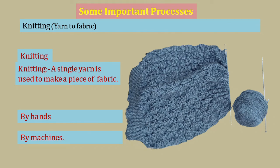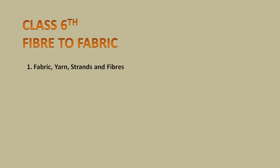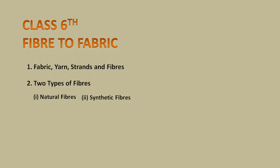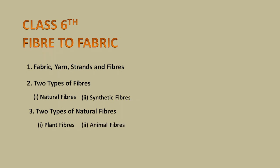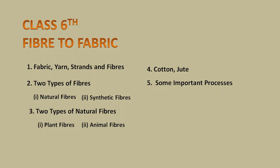Let us now recap what we have discussed in this chapter. We discussed what are fabric, yarn, strands and fibers. Two types of fibers — natural fibers and synthetic fibers. Then two types of natural fibers: plant fibers and animal fibers. Then a little detail about cotton and jute. Then some important processes used in manufacturing of fabric: ginning, spinning, weaving and knitting. Hope you enjoyed this video. Thanks for watching.